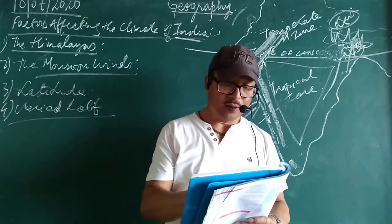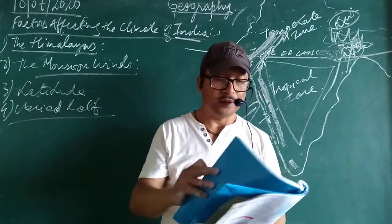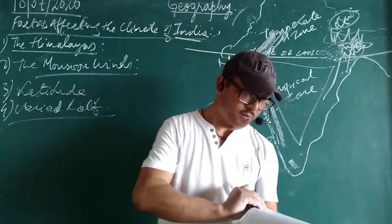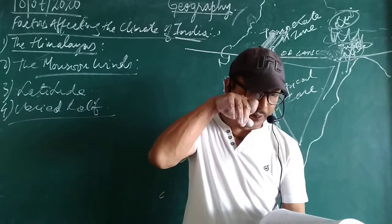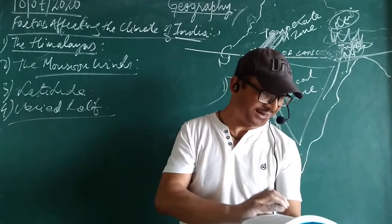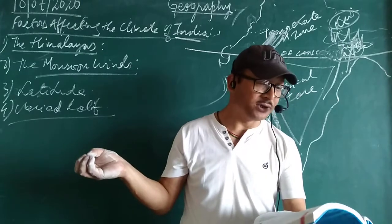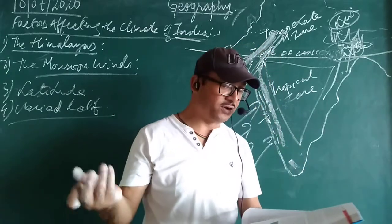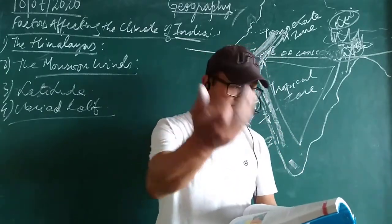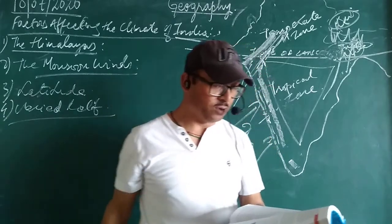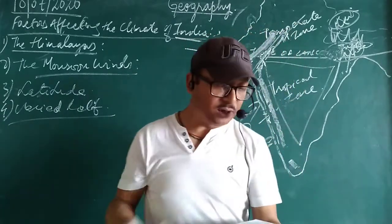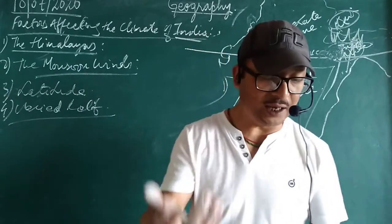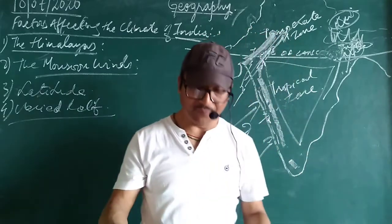Today I will stop here. We will continue later. In the next class I may start about the same factors — I have not completed all the factors which affect the climate. I did only Himalayas, Monsoon Winds, Latitude, and Varied Relief. Still some more factors are there — Altitude and the Influence of Surrounding Seas. After watching these videos, please go through the other factors, read them, try to understand. If you have any problem, you can ask me. Thank you very much.